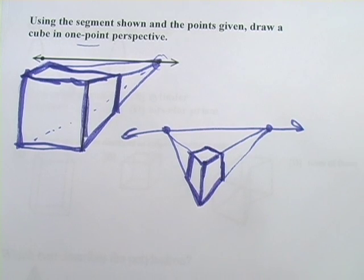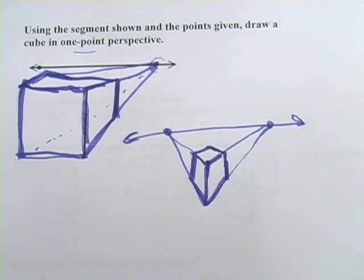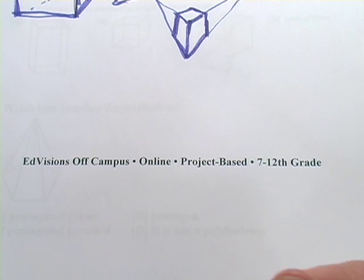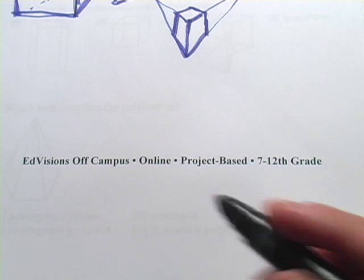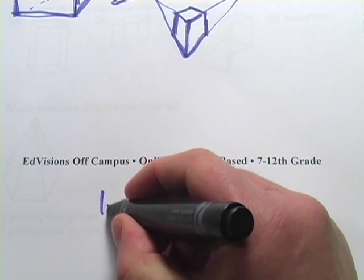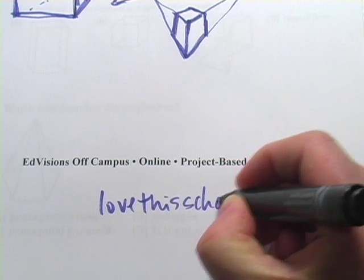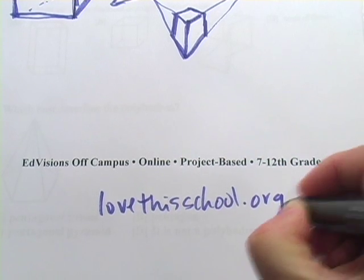So those are some problems with polyhedrons, identifying them and drawing them. My name is Larry. I'm a teacher at EdVisions off-campus. It's an online project-based school for 7th through 12th graders. If you're in Minnesota and you want to check us out, you can see us at lovethisschool.org. Thanks.